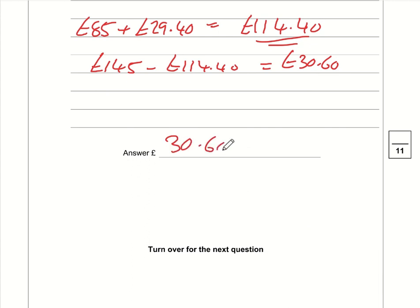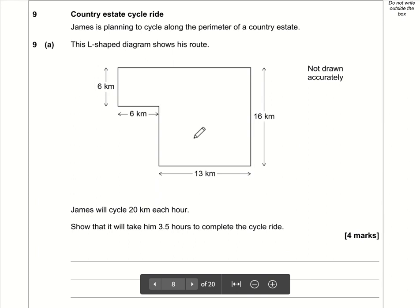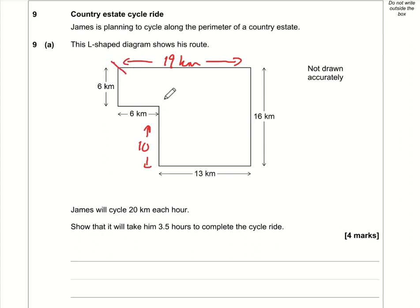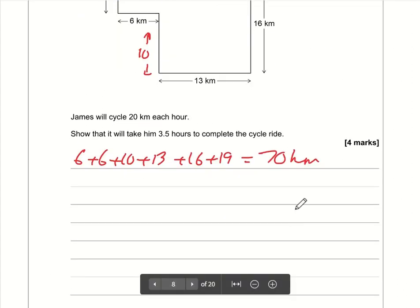Question 9 (perimeter): we need to find the missing side lengths. The top horizontal side is 6 + 13 = 19 km. The missing vertical side is 16 − 6 = 10 km. Adding up the perimeter going clockwise: 6 + 6 + 10 + 13 + 16 + 19 = 70 kilometres.